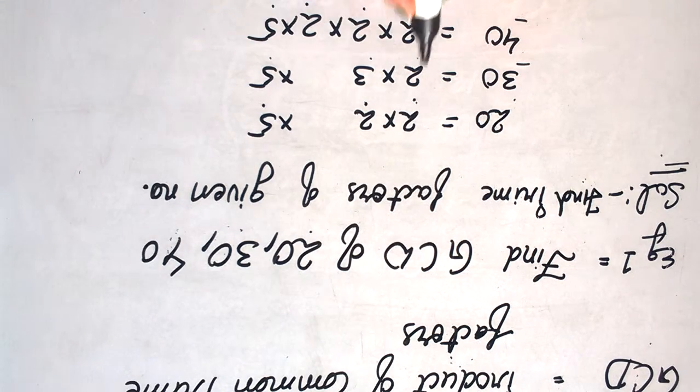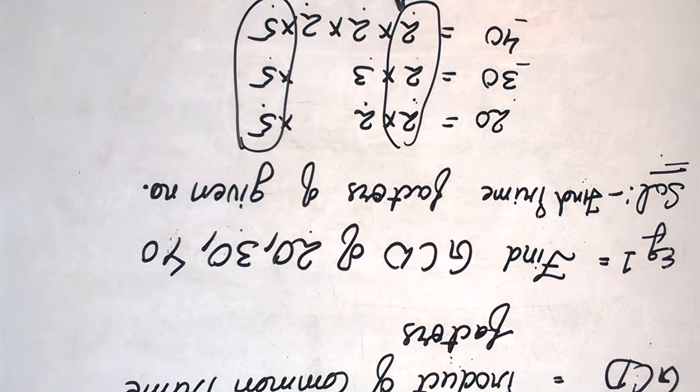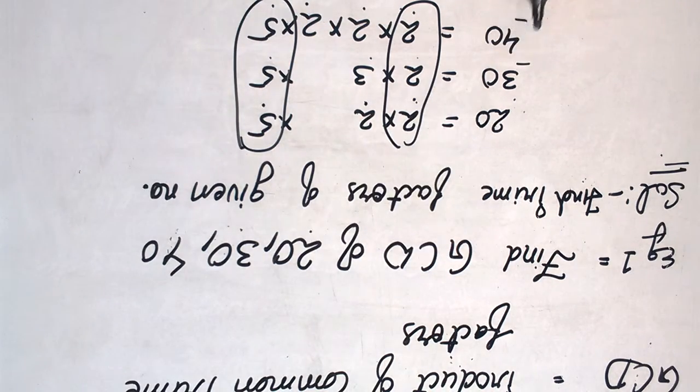Here we can see that 2 and 5 are common prime factors for 20, 30, and 40.